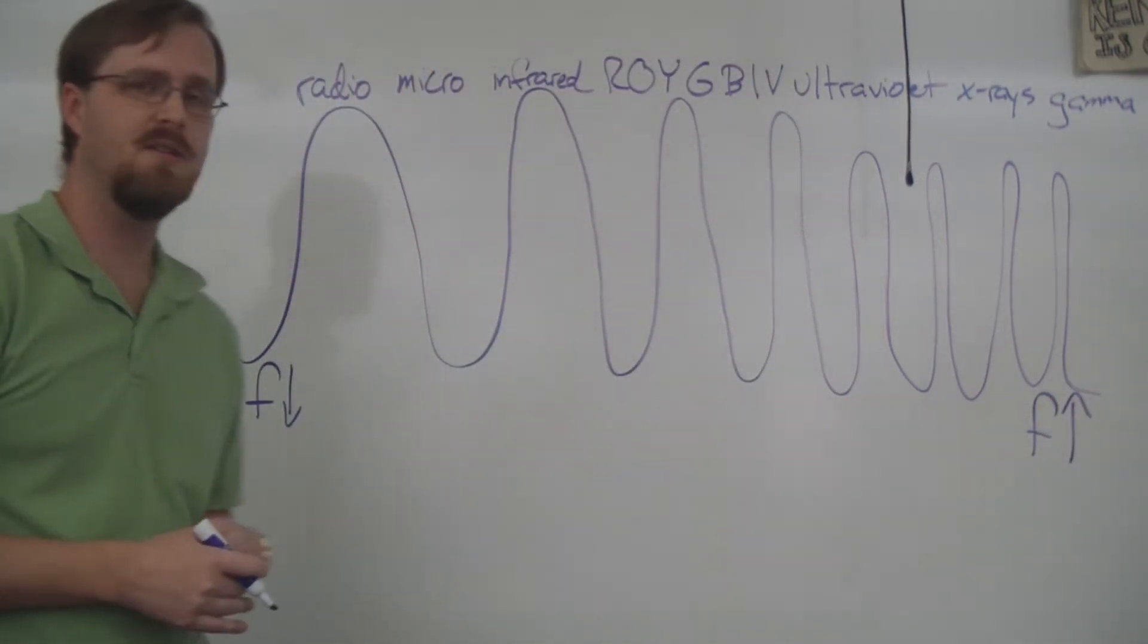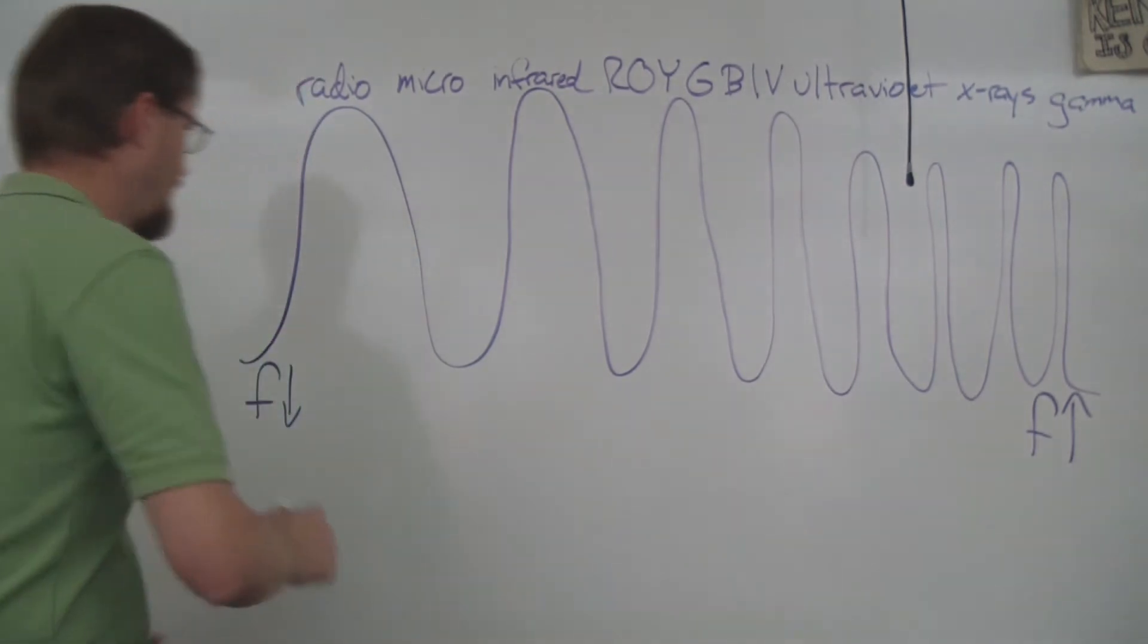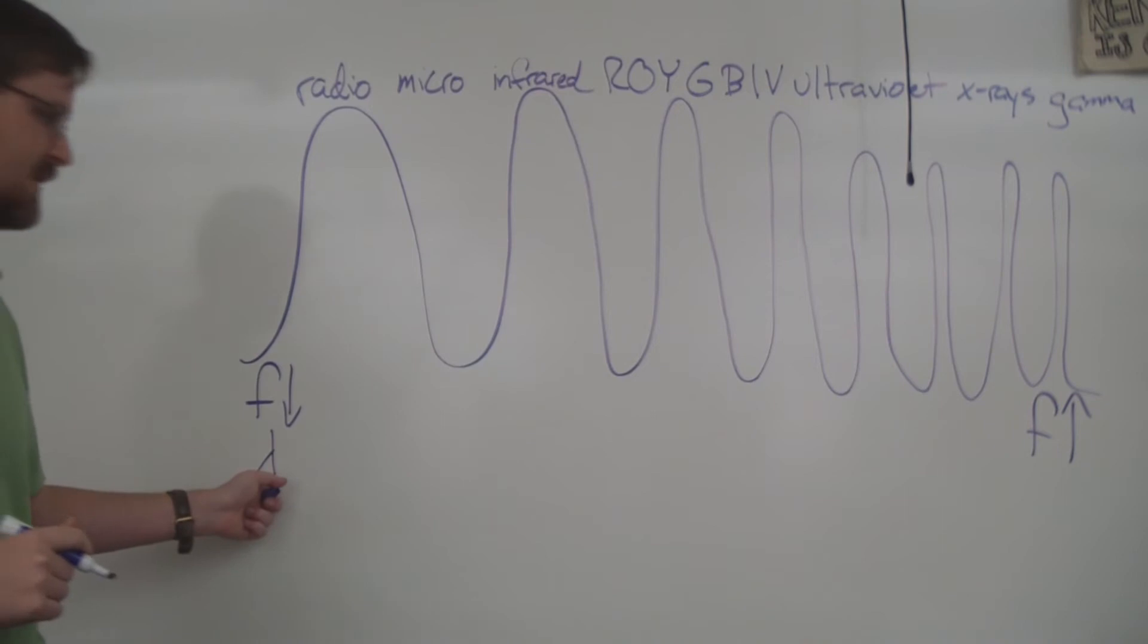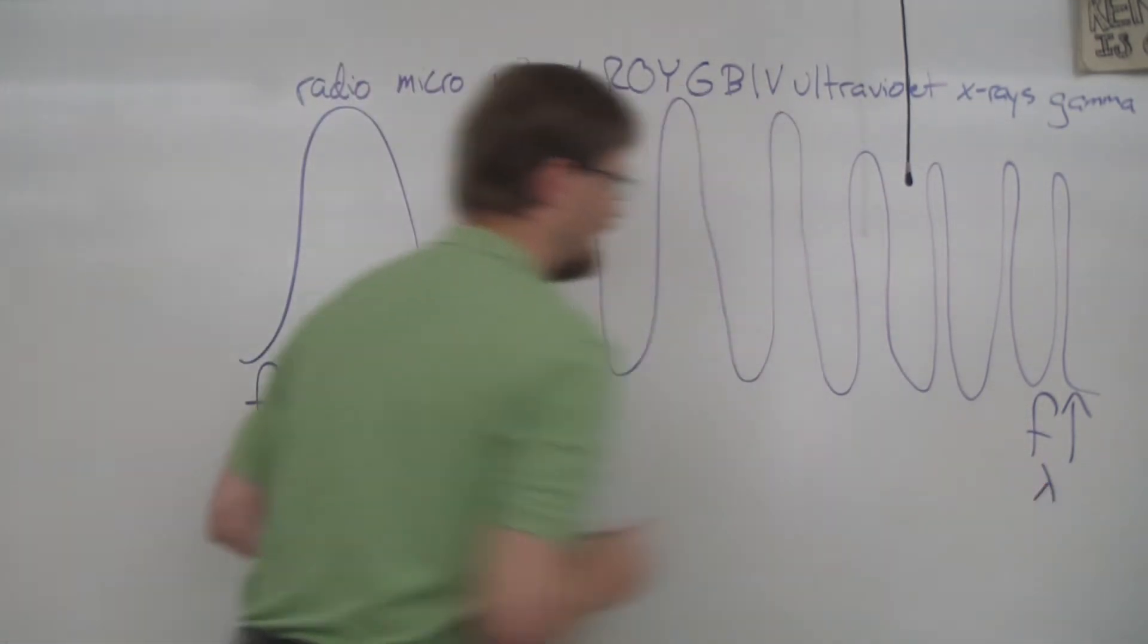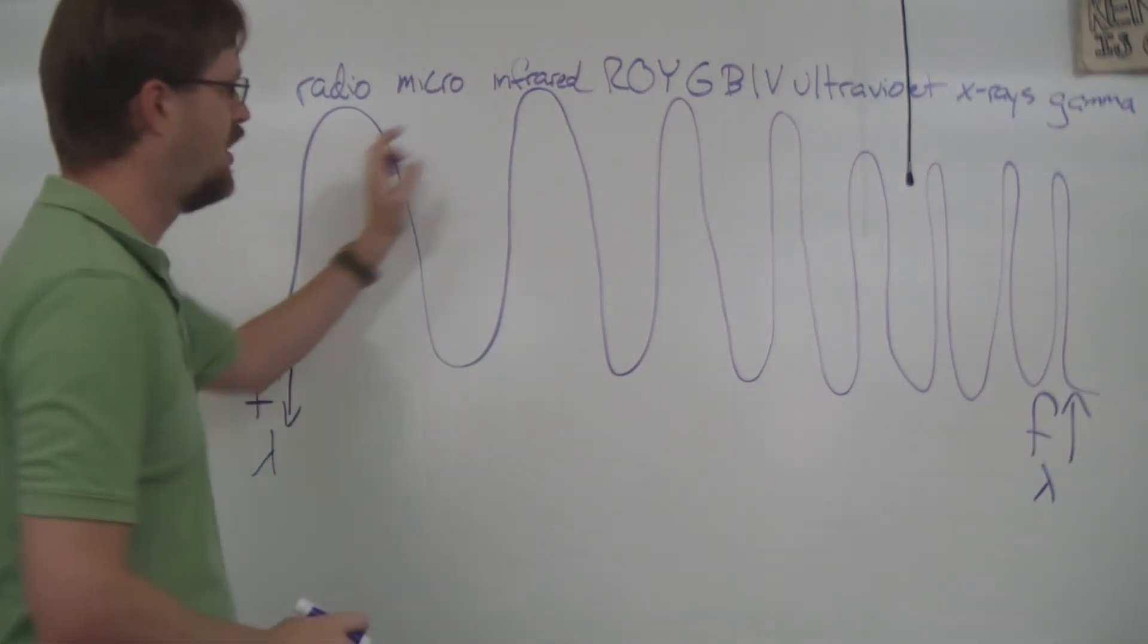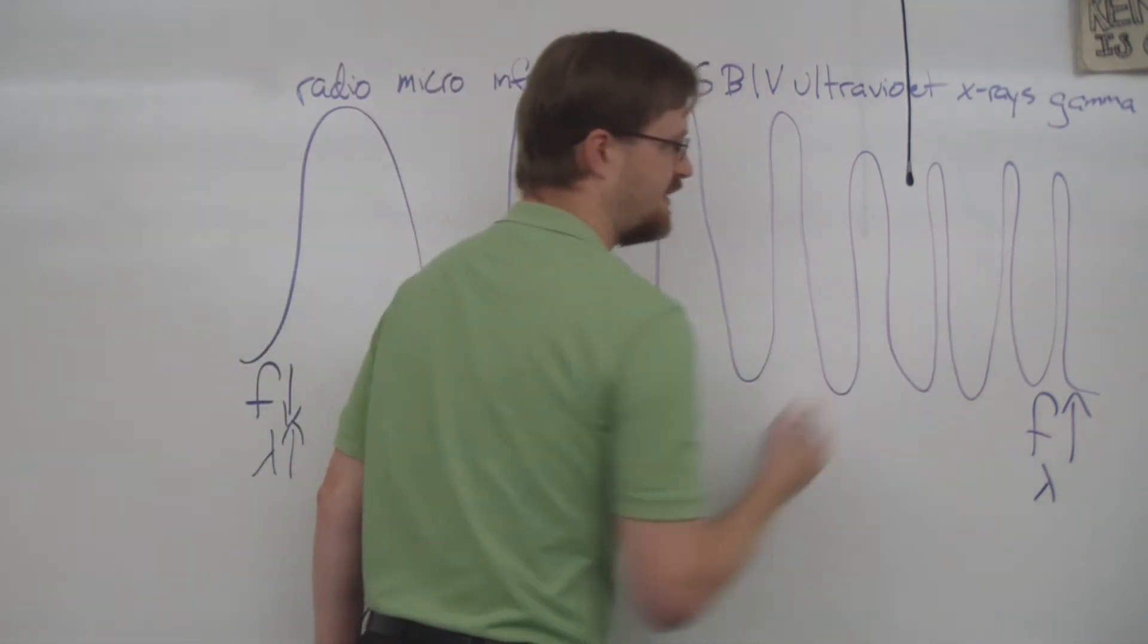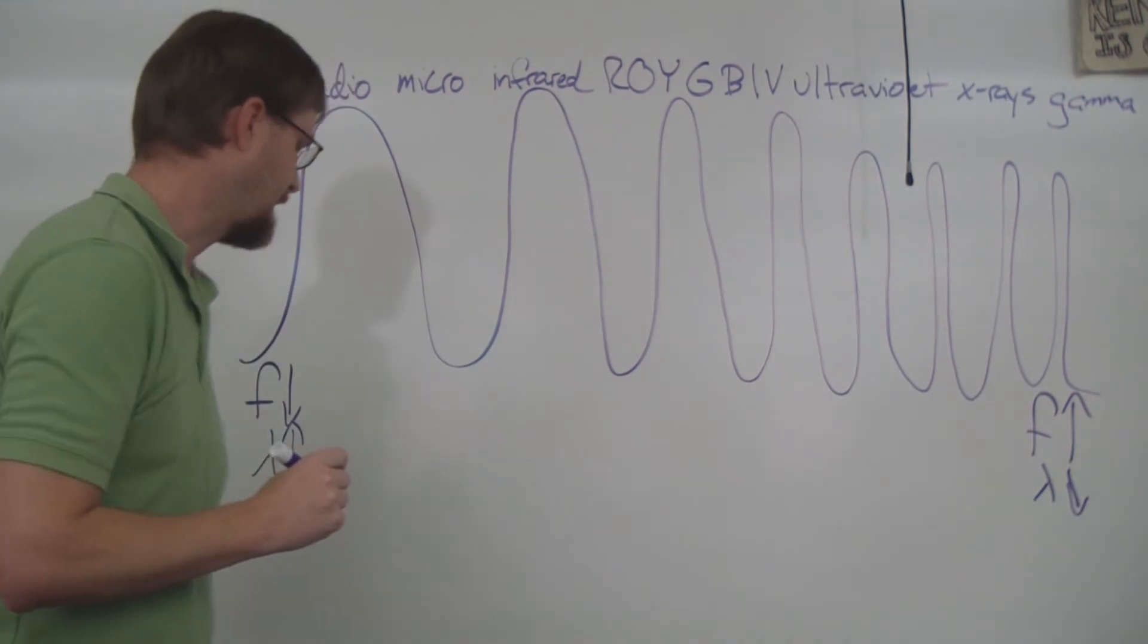The next variable is wavelength. Now wavelength is simply the length of a wave. Wavelength is abbreviated with the Greek letter lambda right here. It looks kind of like an upside down Y. Over here, you can see that the waves are very spread out. There's a long distance in between each wave. So we can say that we have long wavelengths over here. And here, since they're very close together, we have short wavelengths.